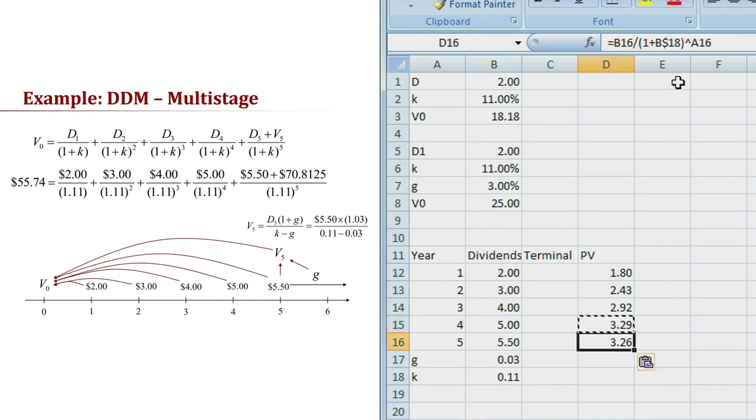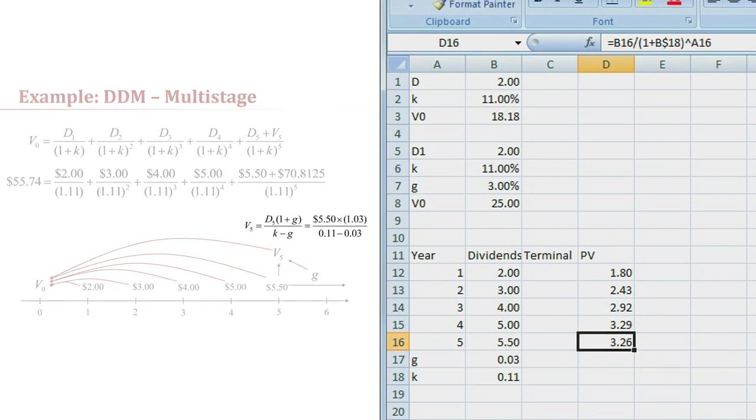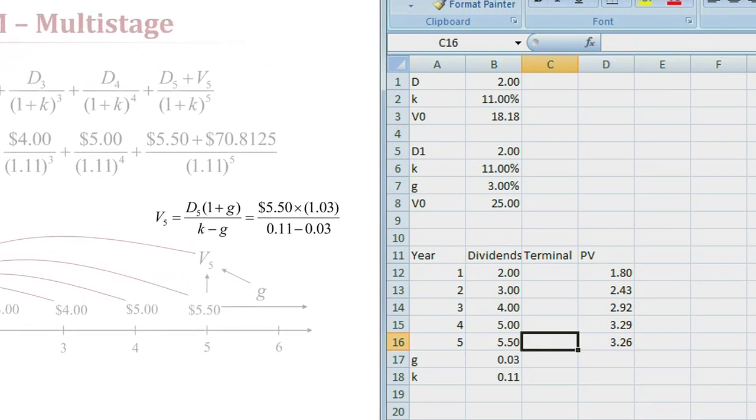I'm going to go ahead and copy that formula down this time. The reason I left it blank is that we need to add the terminal value to the stock and we haven't calculated the terminal value yet. So I'm going to hold off here and calculate the terminal value and then I'll come back and I'll update this present value formula.